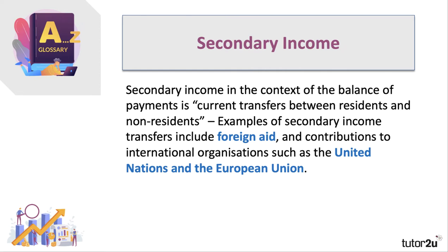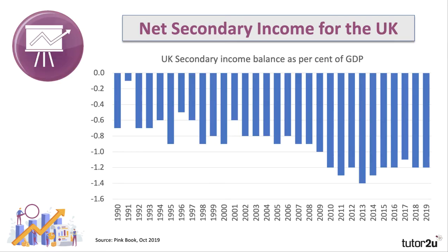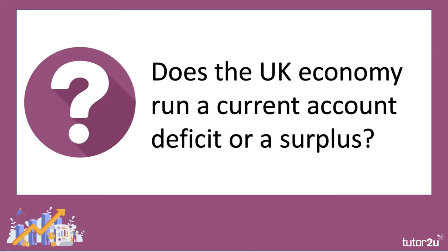Secondary income covers current transfers between residents and non-residents — it is not a return from an investment but a pure transfer. Foreign aid from the UK government to recipient countries is an example, as are contributions to the United Nations and, prior to leaving the European Union, the UK's net contributions to the EU budget. The UK has had a secondary income deficit since the early 1960s — we are a net giver of aid at 0.7% of GNI, and we make significant transfers to international organisations.